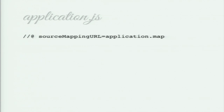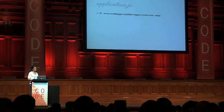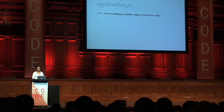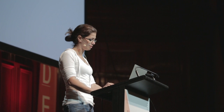The last thing we need is for application.js to know where the source map is. The CoffeeScript compiler actually added this comment for us, and it basically tells us that the map is really close to where the original file is.